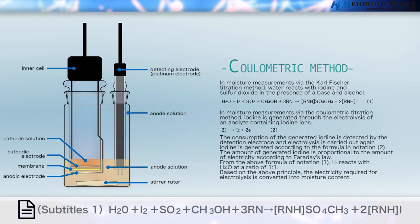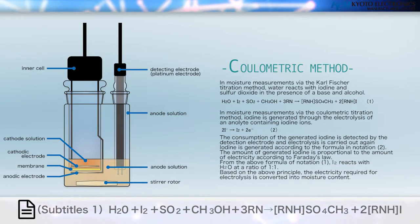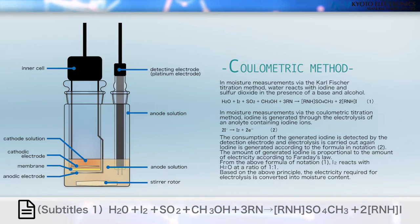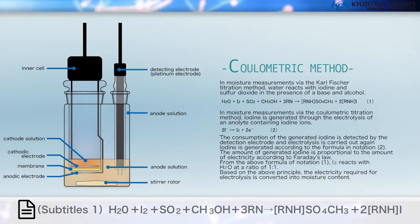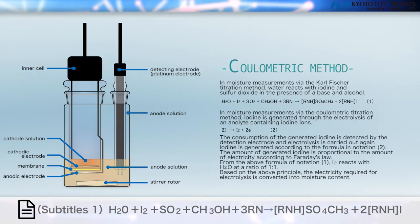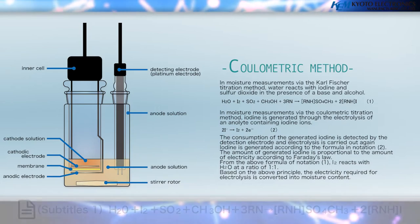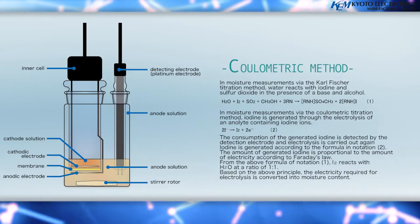From the formula of Notation 1, I2 reacts with H2O at a ratio of 1 to 1. Based on this principle, the electricity required for electrolysis is converted into moisture content.